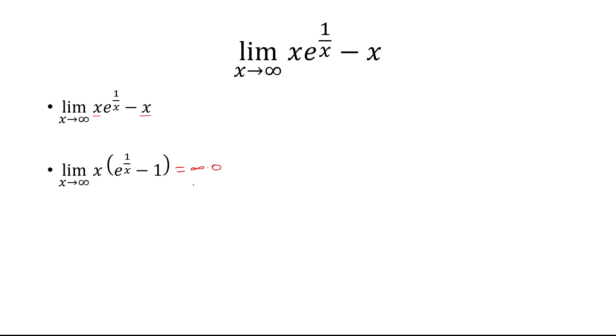And whenever we're in this case, you want to divide by one of the reciprocals. So the option here is x or e to 1 over x minus 1. x is a lot simpler, so we're going to divide by the reciprocal of x. So we're going to divide by, in other words, 1 over x.